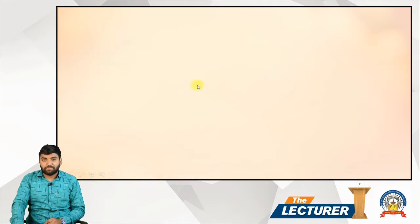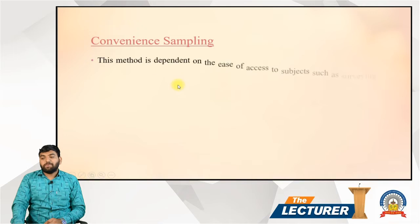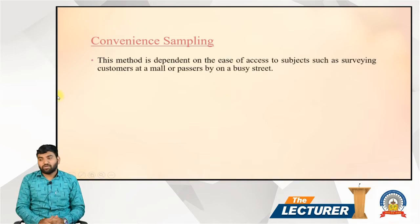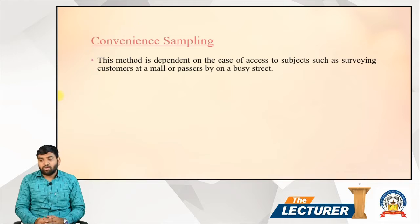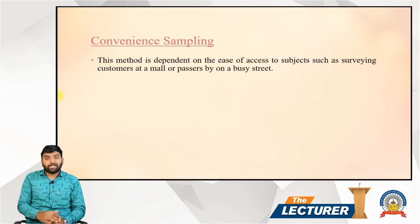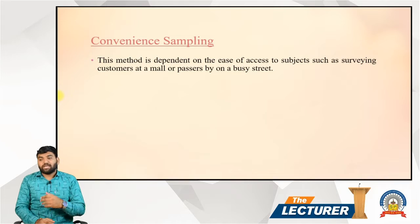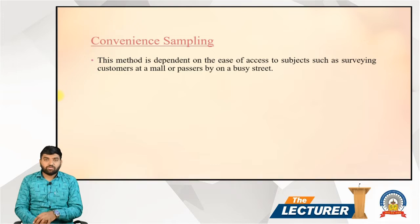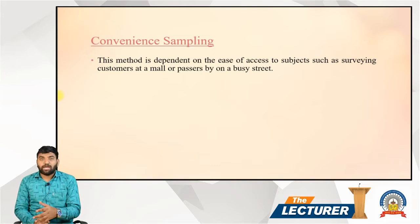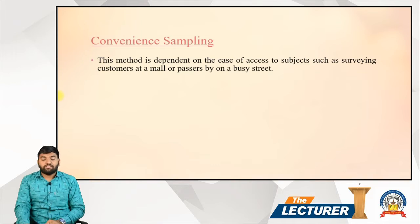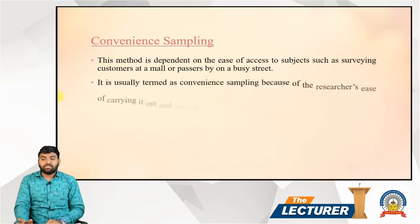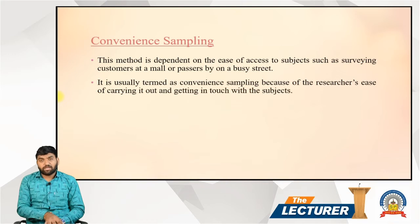Convenience sampling is a method that depends on the ease of access to subjects, such as surveying customers at a mall or passersby near a business. It depends on the subject — suppose you want to do a survey and see how many customers want to give a review.